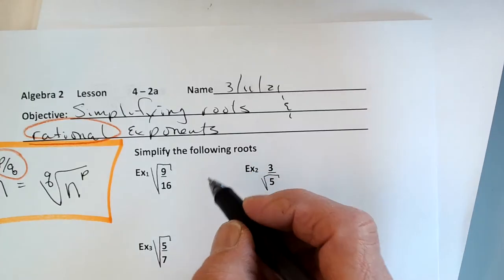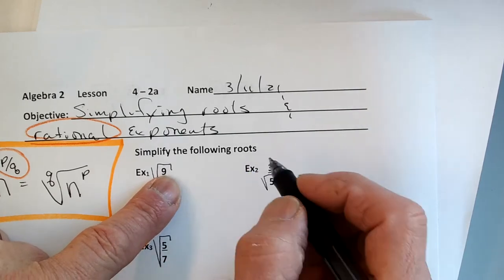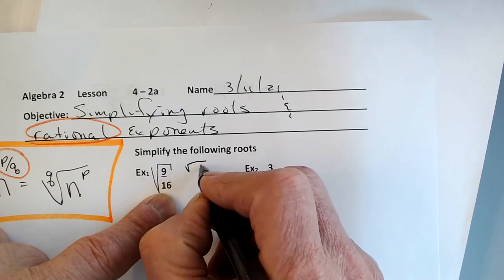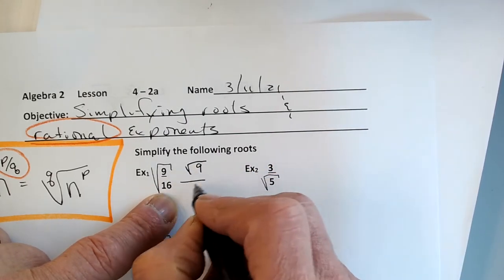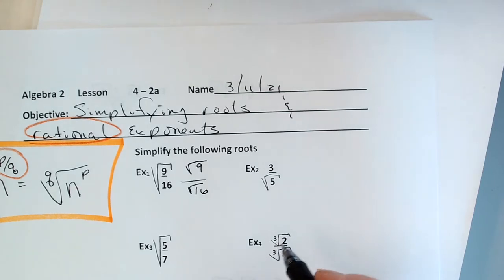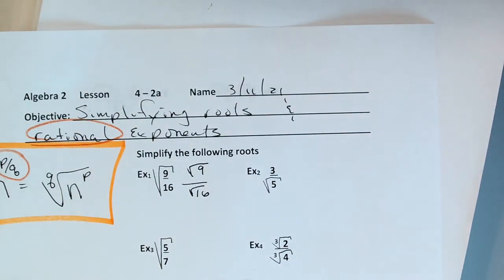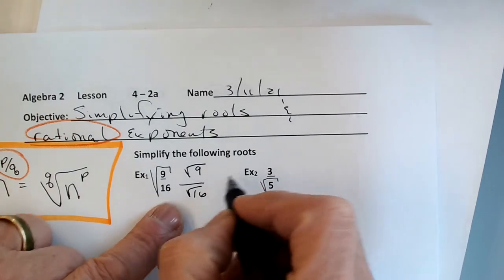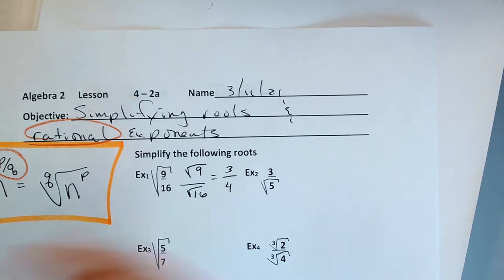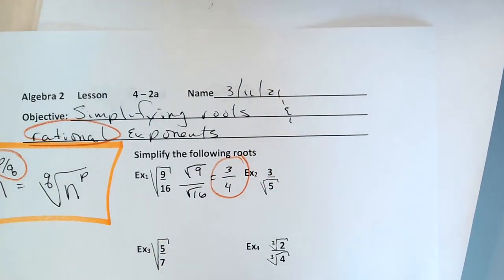I'm not going to make this one hard at all, because there is a square root of 9 — that's 3 — and a square root of 16. So I'm going to rewrite it as the square root of 9 and the square root of 16. Instead of looking at it as a fraction, let's look at the top part and the bottom part. The square root of 9 is 3, and the square root of 16 is 4. And we're done.